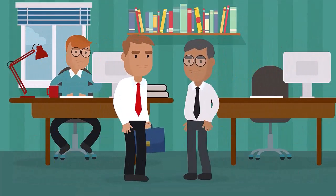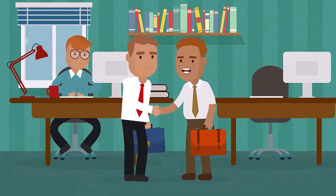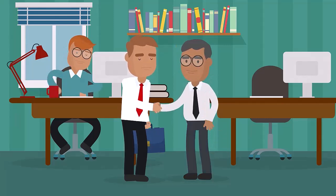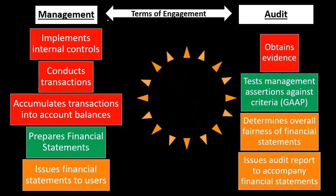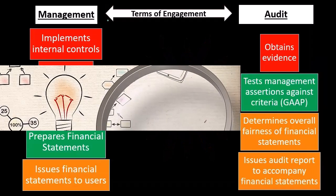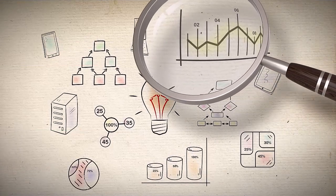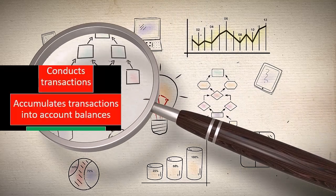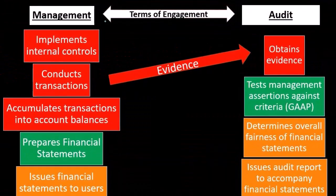There is a terms agreement with management saying that they have created these in accordance with a set of rules compiled — all the assertions we've seen in a prior presentation — and the auditor then says: provide me with this information so that I can do the tests necessary to gather the evidence needed to determine whether or not you have indeed put these into accordance with the engagement or with the criteria.